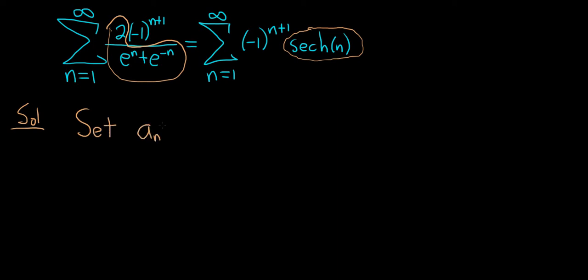So in this case, we're going to set a sub n to be equal to 2 over e to the n plus e to the negative n.